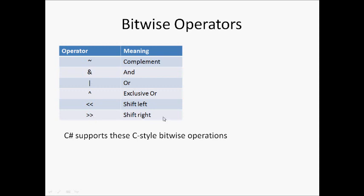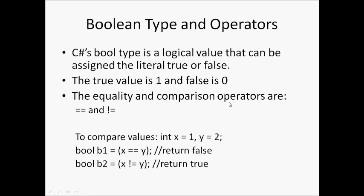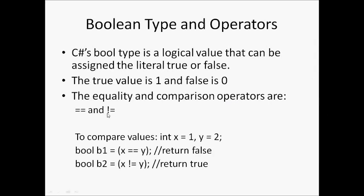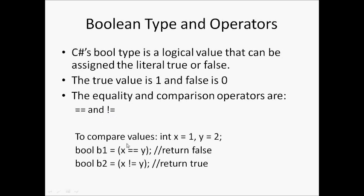Boolean types and operators. C-Sharp's bool type is a logical value that can be assigned the literal true or false. The true value is 1 and false is 0. The equality and comparison operators are double equals (==) and not equals (!=).